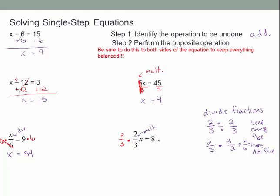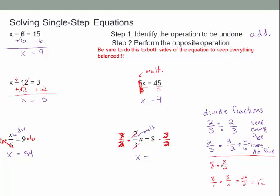So I multiply both sides by the reciprocal — three-halves. The twos cancel and the threes cancel, leaving x. Then for three-halves times 8: we can put 8 over 1 and multiply straight across to get 24 over 2, which equals 12. Or, since 2 divides evenly into 8, we can divide first — 8 divided by 2 is 4, then 4 times 3 is 12. So x equals 12.